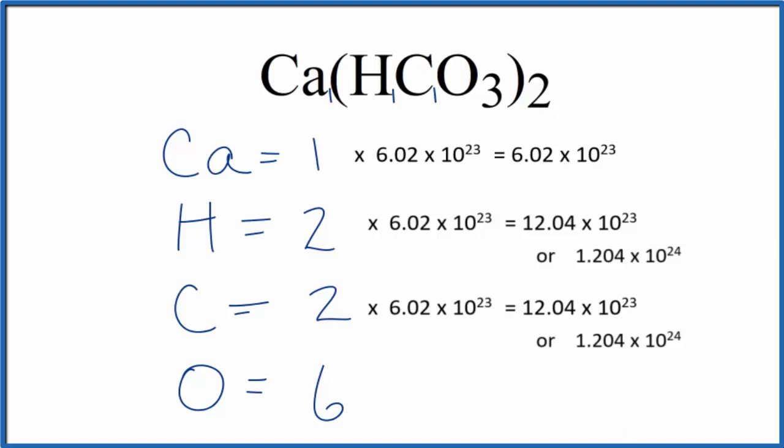And for oxygen, we would multiply this 6 times Avogadro's number, and that would give us the number of oxygen atoms in one mole of calcium hydrogen carbonate.